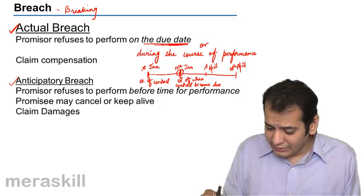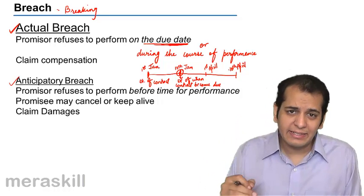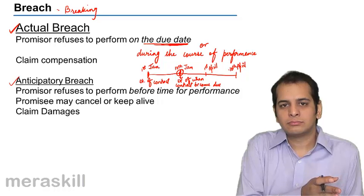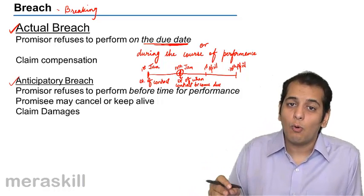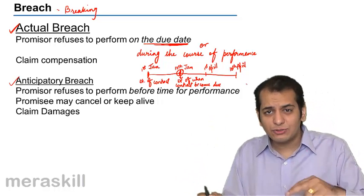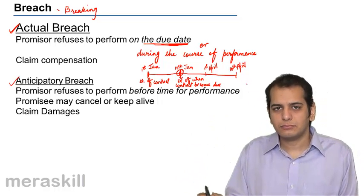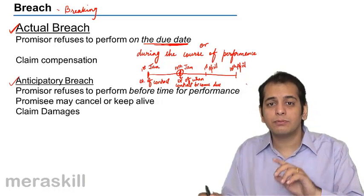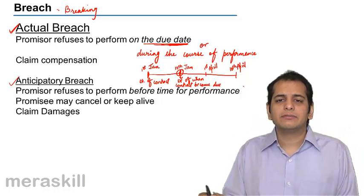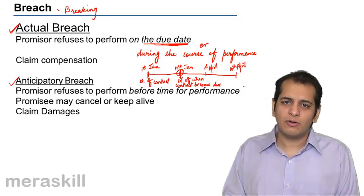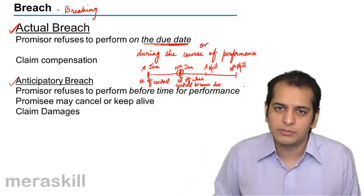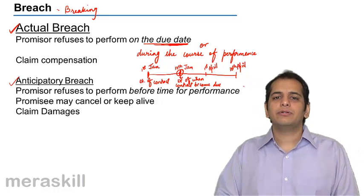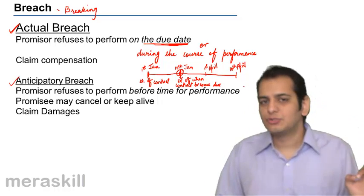In this case, I am breaching the contract during the course of performance. The course of performance runs from 10th Jan to 10th April, and at any time after starting the contract, if I refuse to perform, that will also be called actual breach. So actual breach has two scenarios: when the promisor refuses to perform on the due date, or if he has started the contract but refuses to perform during the course of performance. In either scenario, it is called actual breach.